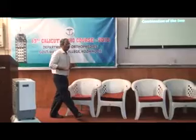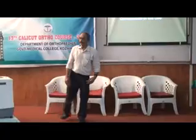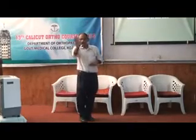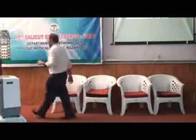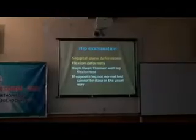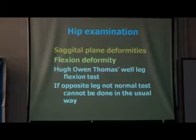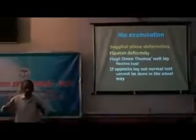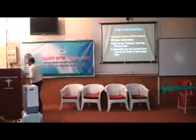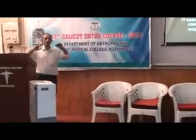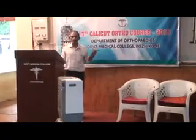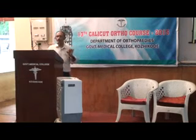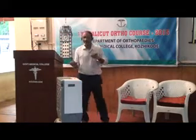Then look at the deformities — in the coronal plane (abduction or adduction), in the sagittal plane (flexion and extension), and in the transverse plane (rotational deformities). If the ASIS is tilted, it is probably an abduction deformity. Place your hands, feel for the inguinal ligament, move superiorly and laterally, palpate the ASIS, and confirm the levels. If the ASIS is lower, think of an abduction deformity; if higher, think of an adduction deformity.